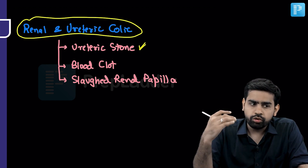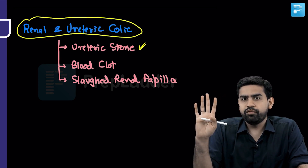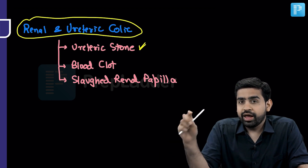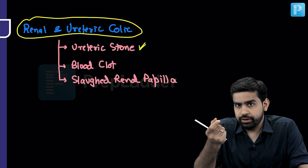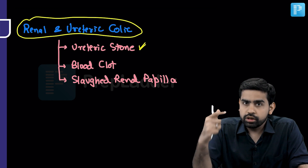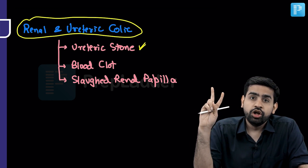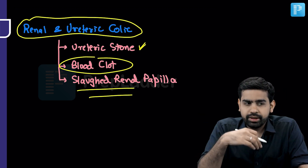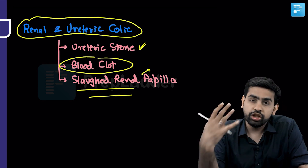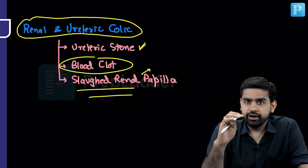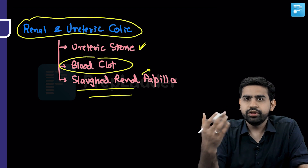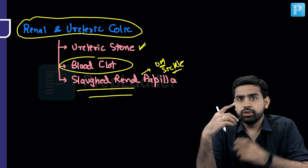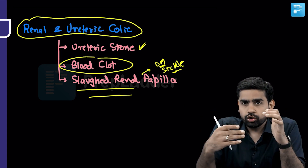Can you think of a condition where there is no stone in the ureter but the patient still has colicky pain? If there was bleeding from the kidney and blood clotted in the ureter, that clotted blood can also cause colicky pain — this is called clot colic. Blood clots can also lead to colicky pain. Additionally, sloughed renal papillae — in patients with diabetes mellitus, tuberculosis, or sickle cell disease — can also cause colicky pain. So the most common reason is a ureteric stone, but blood clots and sloughed renal papilla are other reasons.